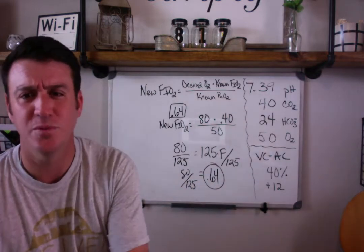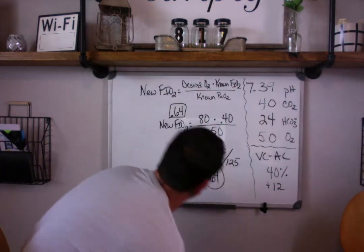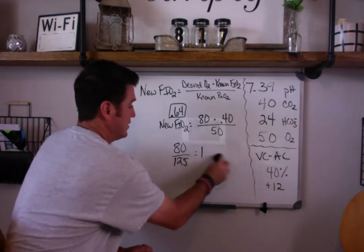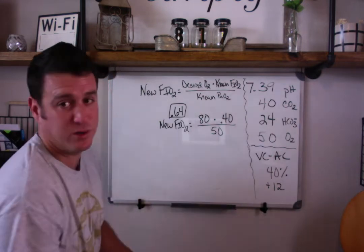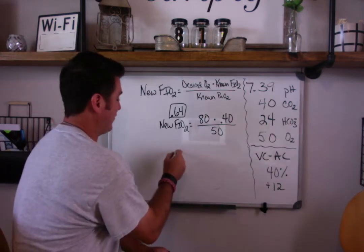So you just use your PF ratio, use it and then plug the numbers in. Let me show you another way to do this. Remember I talked about another video, you want to really impress somebody. You want to tell them what the PaO2 is going to be before you draw the blood gas.